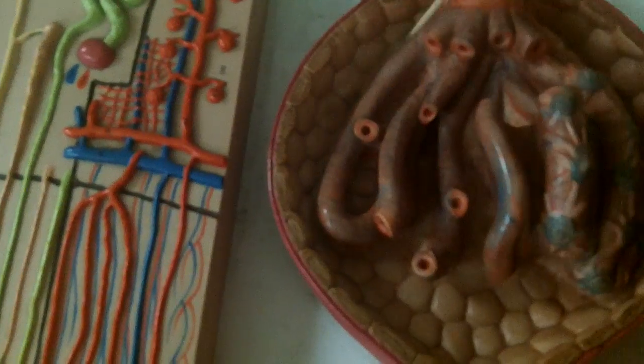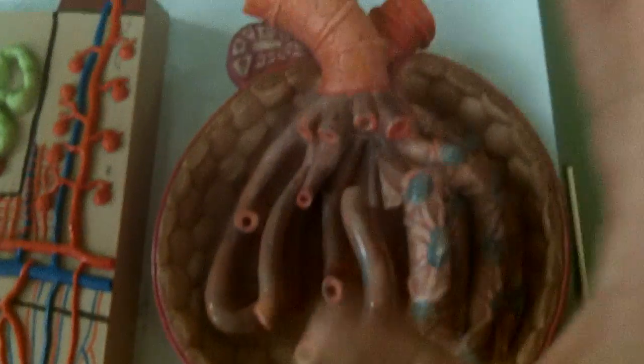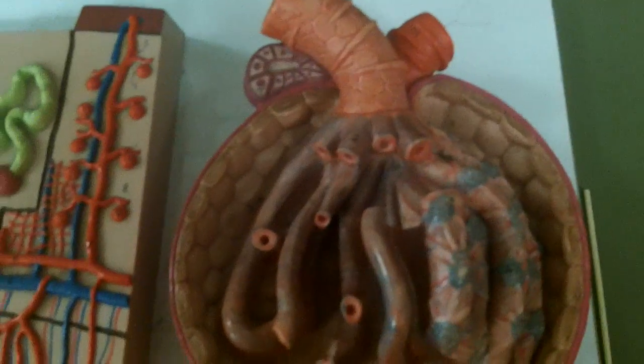Here we have the glomerular capsule, and together the glomerulus with the capsule create the renal corpuscle.